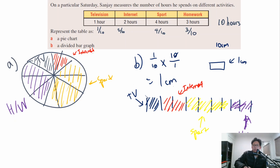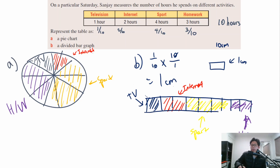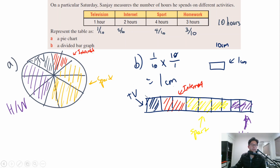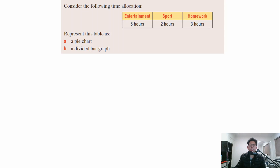So this is roughly what your bar graph should look like: 1 box for TV, 2 boxes for internet, 4 boxes for sport, and 3 boxes for homework. Now pause the video and have a go at drawing these yourself.